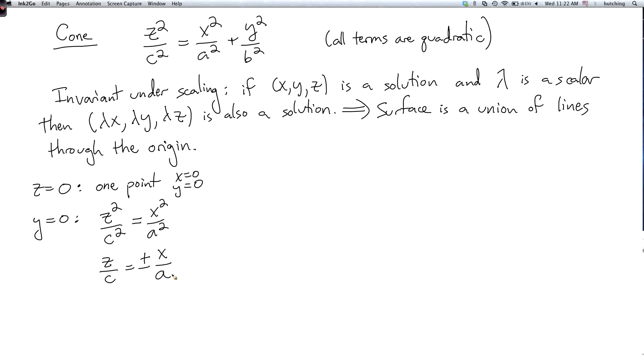And this curve is two lines. So there's one line where z over c is plus x over a and another line where z over c is minus x over a.